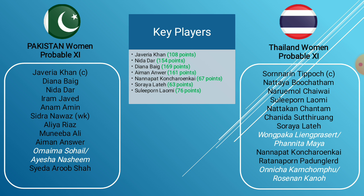For Thailand, wicket-keeper Nanapat has been selected purely on her performance against West Indies and England, where she alone contributed to around 30% of the runs. Being a wicket-keeper she can also gain crucial points via catches, run-outs and stumpings. Soraya Lathe is the only Thailand bowler to take a wicket in each of the opening two matches, making her a key Thailand player. Sulepon Laomi has bowled well against all three top oppositions, occasionally takes wickets, and with her right-arm leg break can come in handy on this pitch.